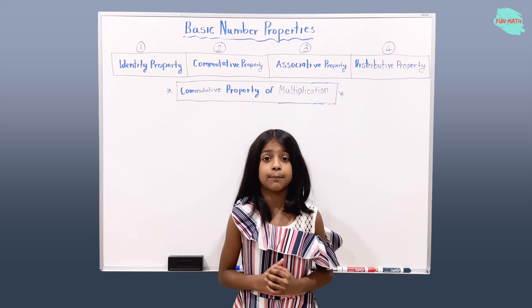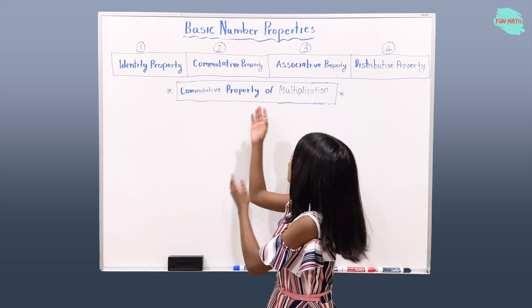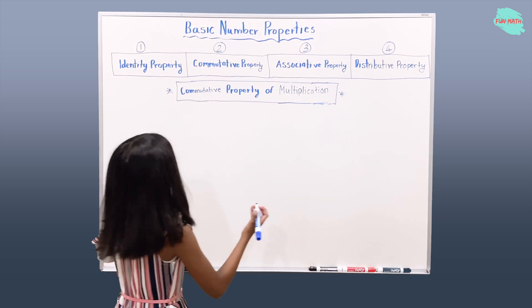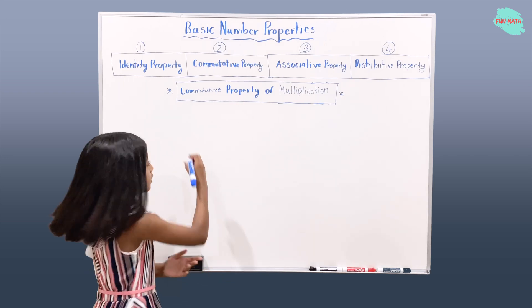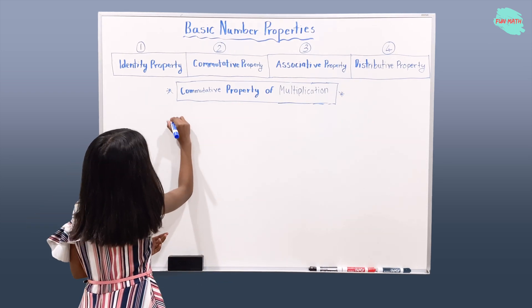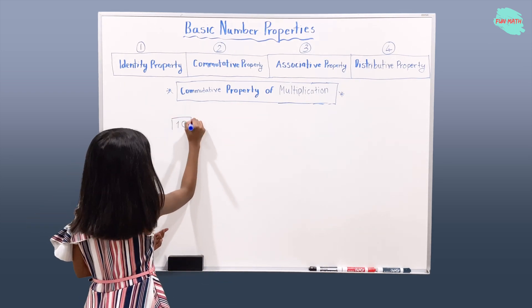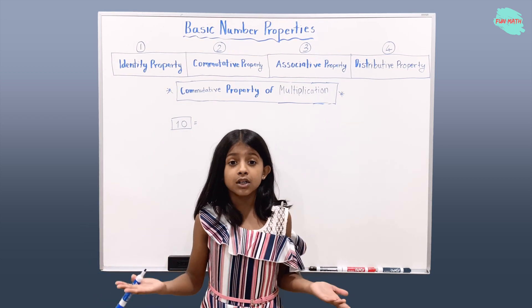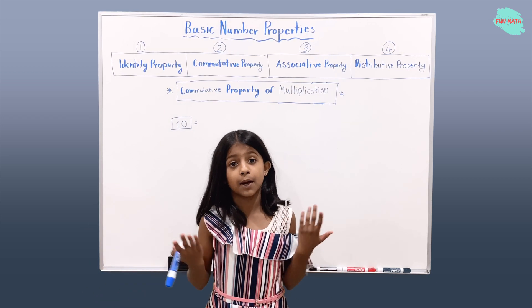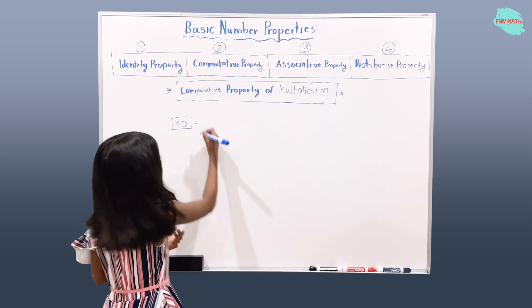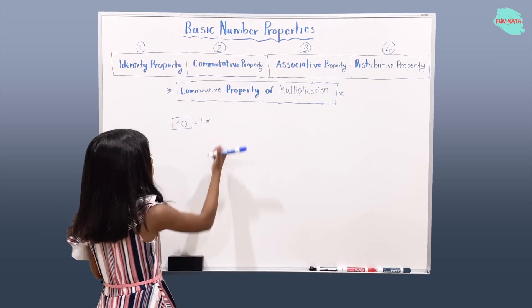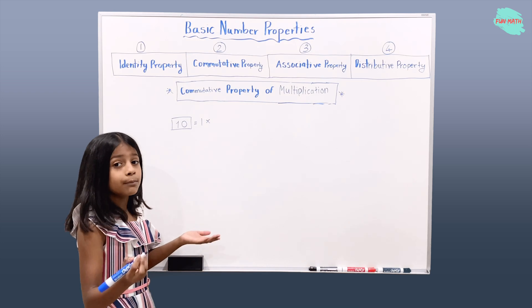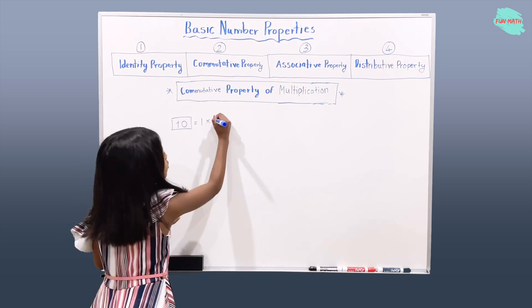Let's take an example to understand the commutative property of multiplication. So let's find the factors of 10. Any number multiplied by 1 will give you that number, so 1 multiplied by 10 gives you 10.